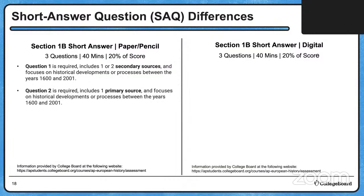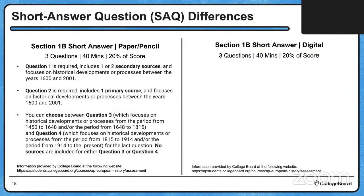Question two is also required for the paper and pencil exam — it's a primary source focusing on the same time period, 1600 to 2001. It might be a primary source text or an image. For question three versus question four, students get a choice. There is no stimulus for these — they are just text-based questions. Question three focuses on historical developments from 1450 to 1648 (period one) or 1648 to 1815 (period two). Question four covers 1815 to 1914 and/or 1914 to the present. Students choose which one they prefer and only write one of the two.